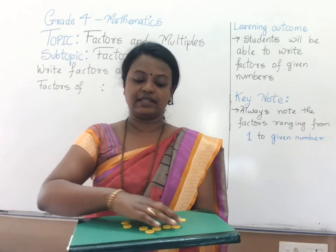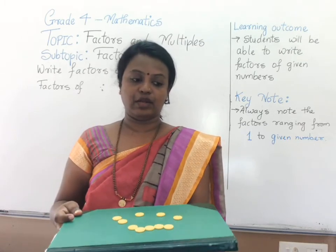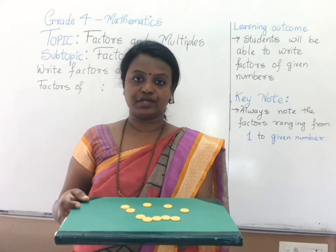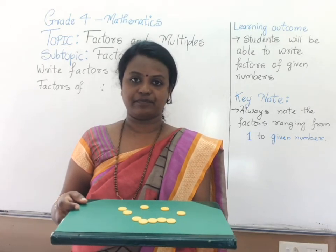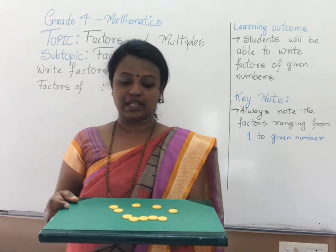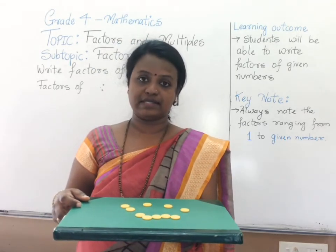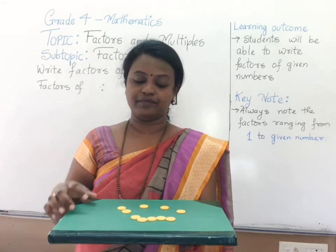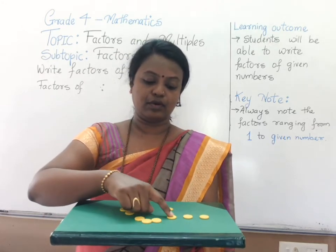As you can see there are yellow coins. In all together there are 10 yellow coins. If I ask you to arrange them in a proper order, say in a row of 1, you would arrange it as follows.